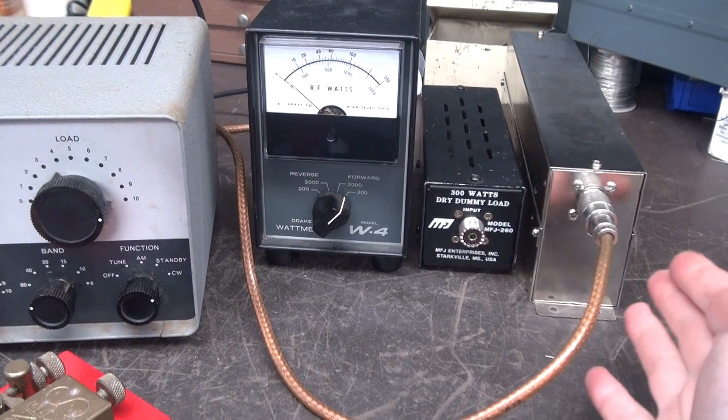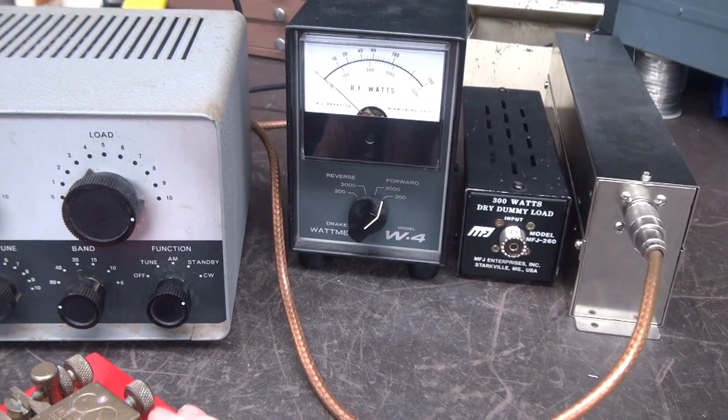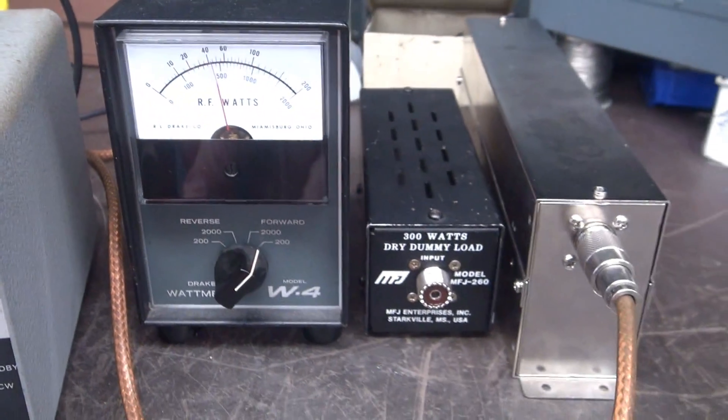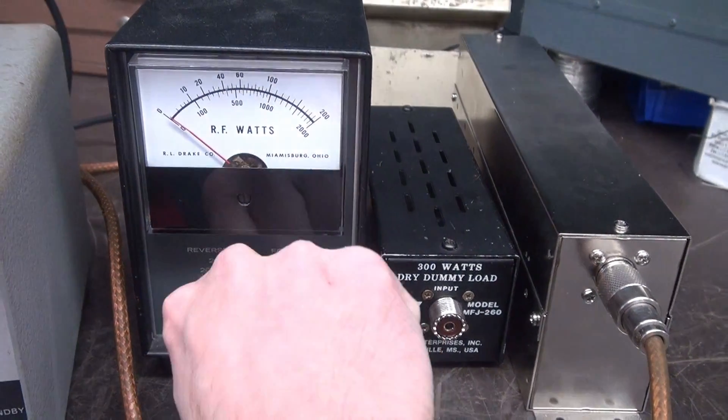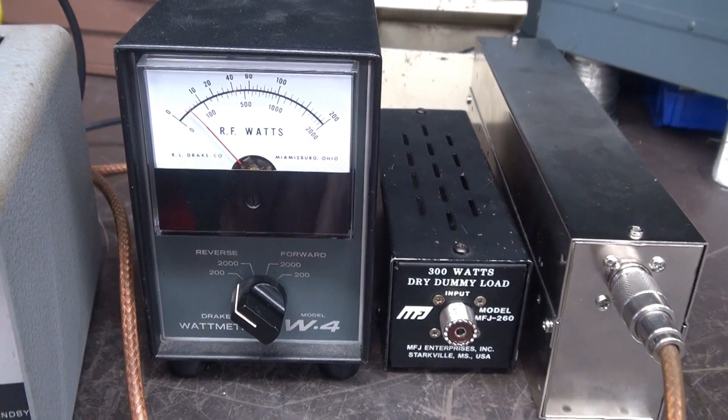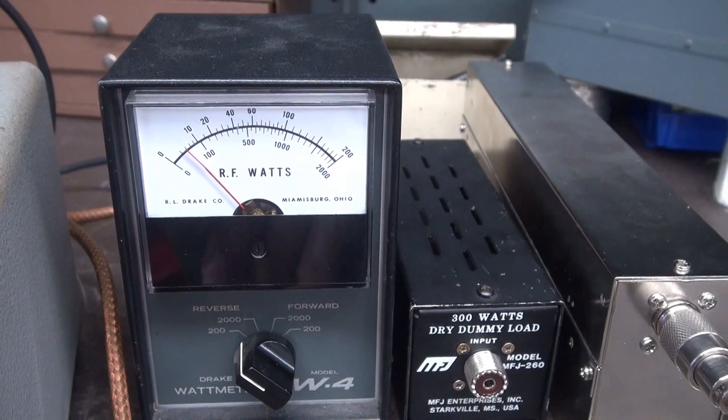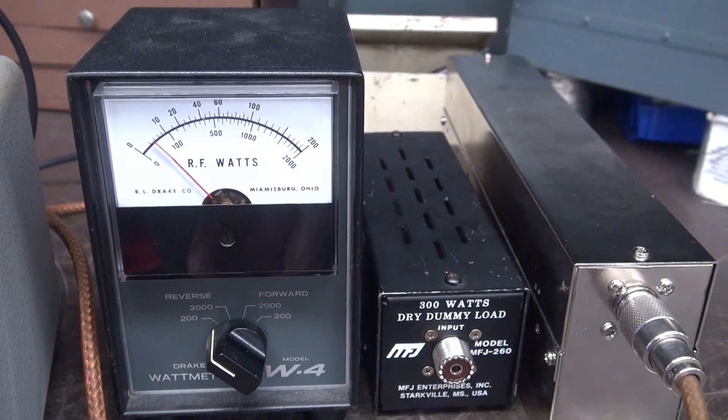Alright, we're connected to the large dummy load now. Same deal, about 45 watts. Check reverse power, and looks like it's a little bit lower than the MFJ, maybe about four watts of reverse power.